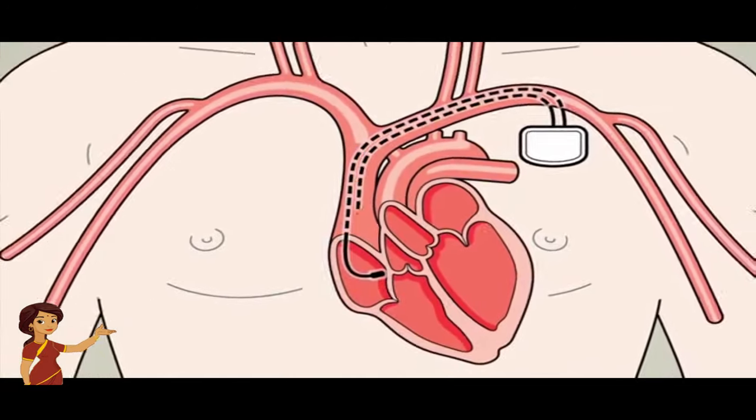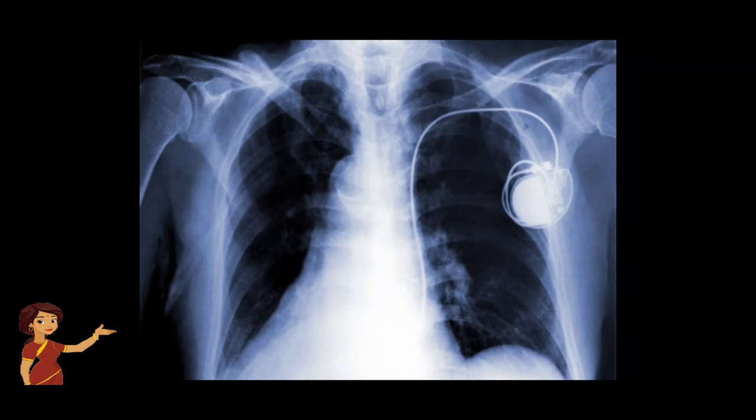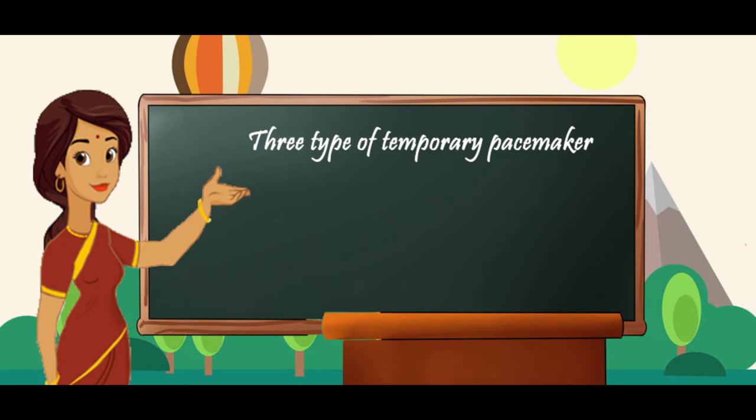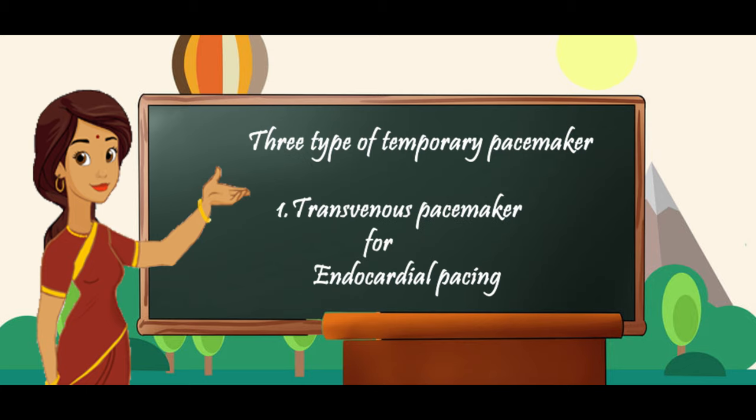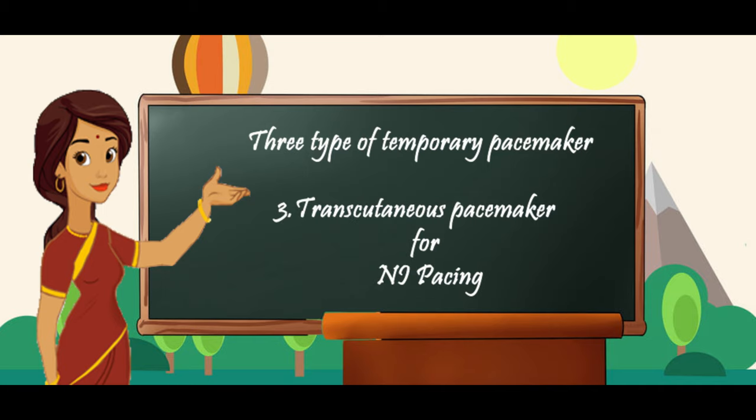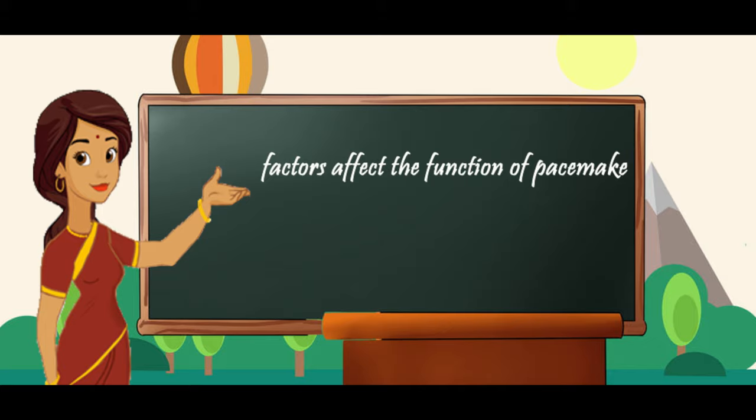Temporary pacemakers is one that has a power source outside the body. The three types of temporary pacemakers are transvenous invasive pacemaker for endocardial pacing, transthoracic pacemaker for epicardial pacing and transcutaneous pacemaker for non-invasive pacing.